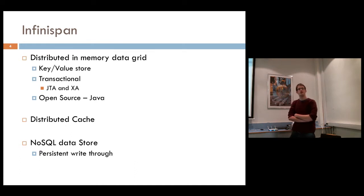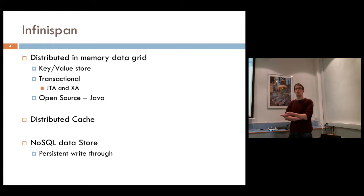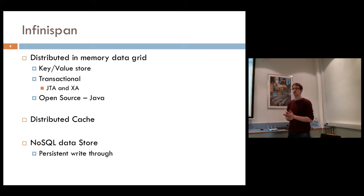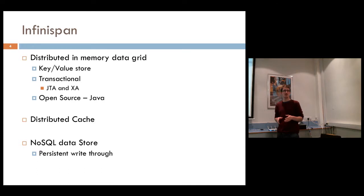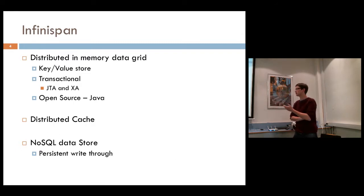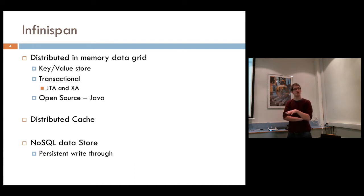There are two primary use cases for InfiniSpan. One is a distributed cache — if you have a database where reads are causing a bottleneck, you can put InfiniSpan in front of this database and it'll provide caching, which will be quicker because everything's stored in memory as opposed to persistent storage. The other use is as a NoSQL data store on its own, storing everything in memory, with persistent write-through to an underlying storage scheme available if needed.